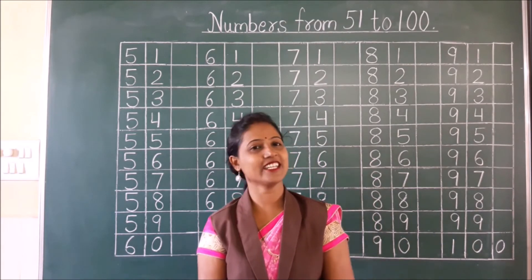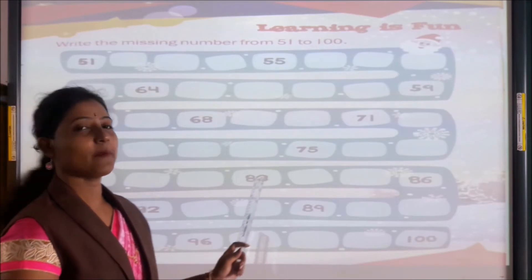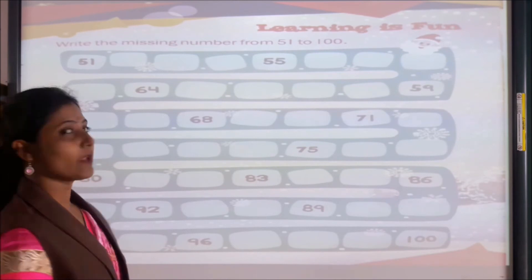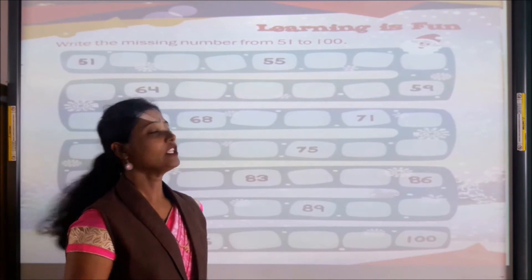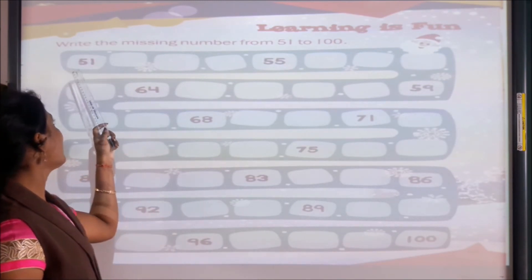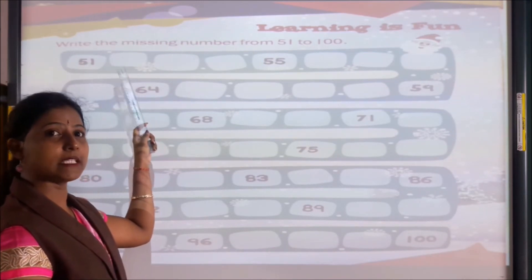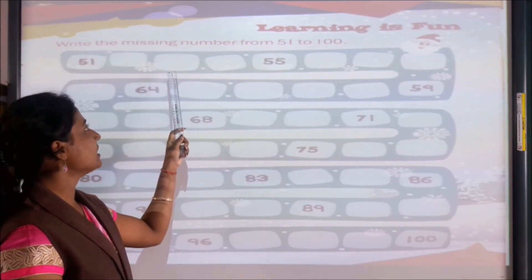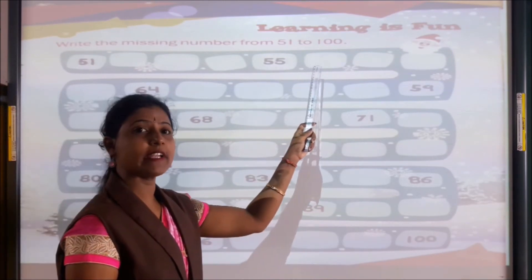I hope you enjoyed learning today. Now let's see your homework. This is page number 43 from your workbook Skills in Maths. In this page you have to write the missing numbers from 51 to 100. 51 is written here, so you have to write the next missing number: 52, 53, 54. Then 55 is written here.